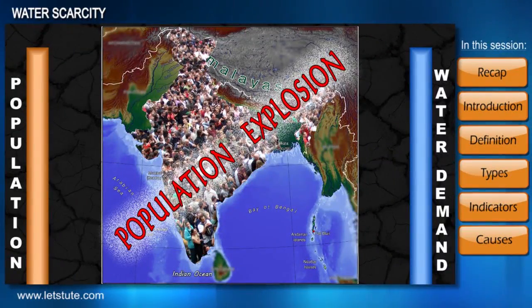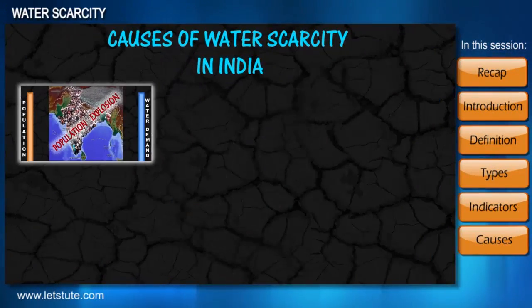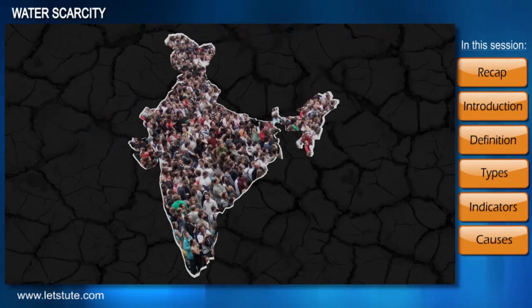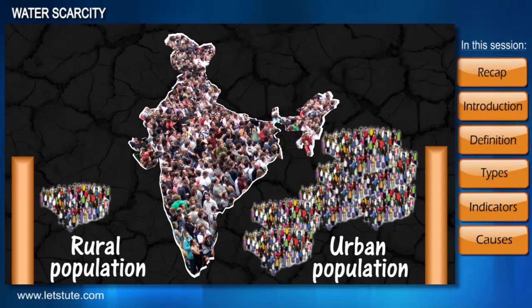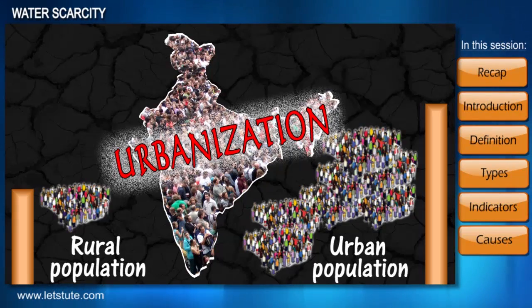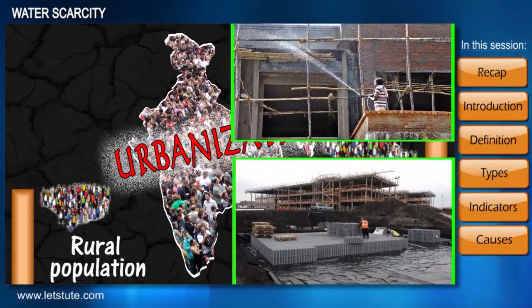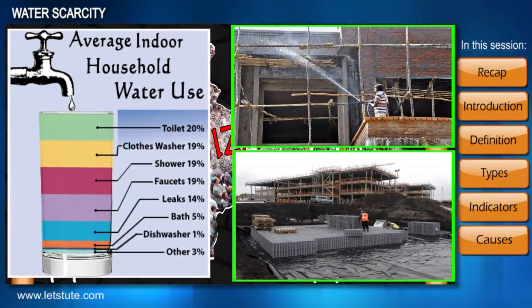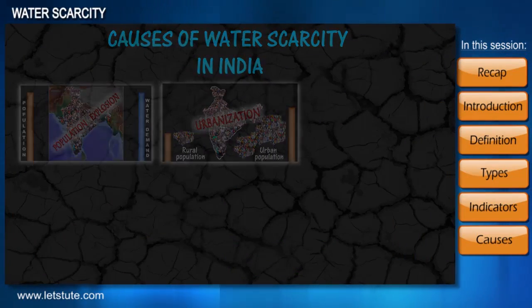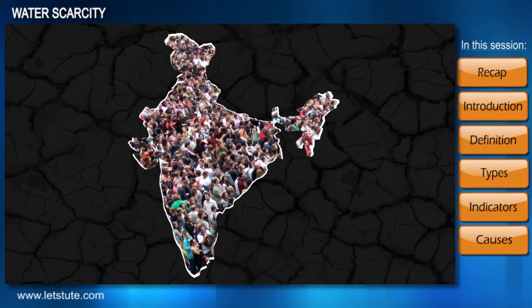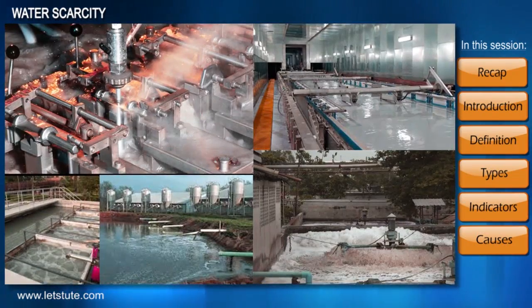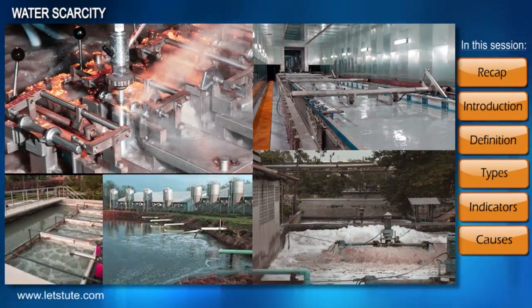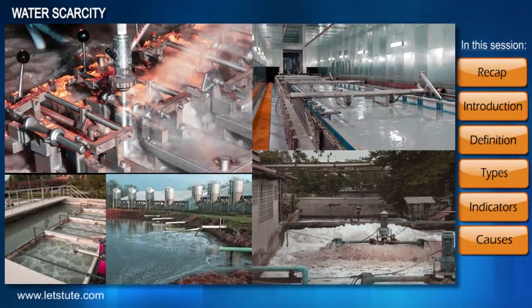Population explosion is one of the key reasons for water scarcity. This growing population also tends to shift from rural to urban areas, and urbanization further increases water requirements for construction and other developmental activities. The rapidly growing population has also resulted in an increasing number of industries, and water is required at almost every stage of production, putting a heavy load on total freshwater available.